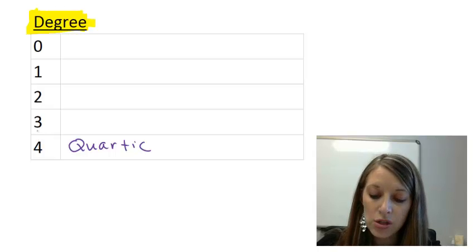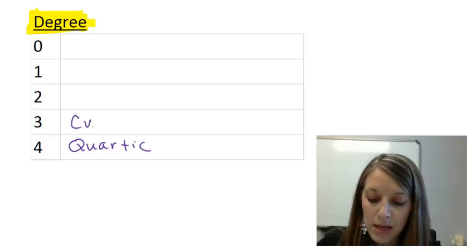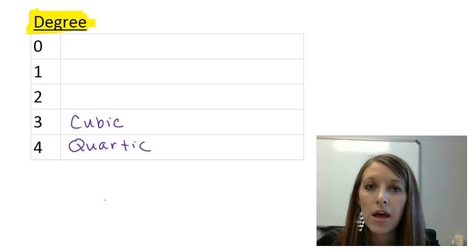Going along with that, degree 3 polynomial is named a cubic polynomial. If we think of a three-dimensional figure, it might be a box or a cube. So those two names go right along with their degree.